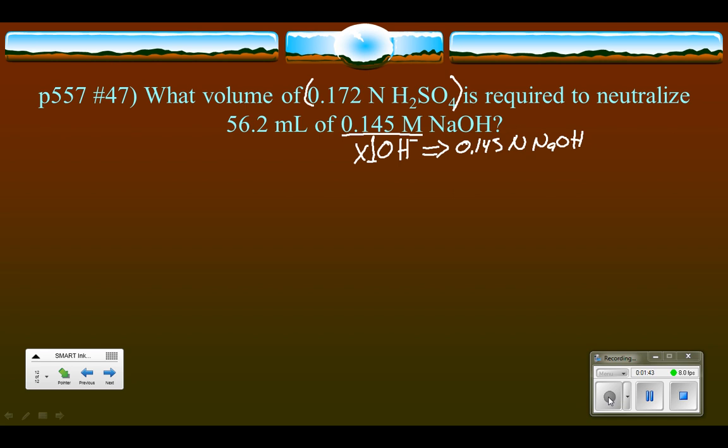All right. And then if we have normalities, then we can use the simple relationship that the normality of the acid times the volume of the acid has to equal the normality of the base times the volume of the base. Those two are equal to each other because the normality makes sure that they're equal to each other.